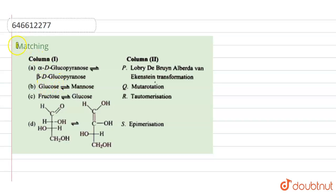Here the question is a matching type. The first one is alpha-D-glucopyranose and beta-D-glucopyranose. These are in the open-chain representation — these are our alpha-D-glucose and beta-D-glucose.